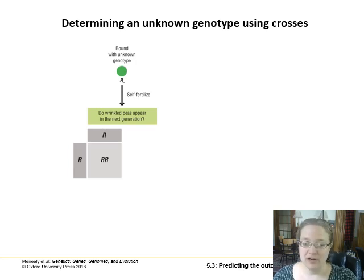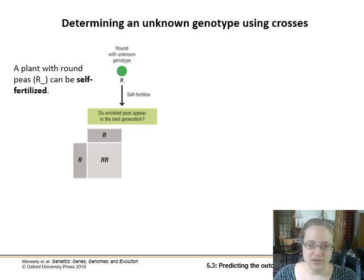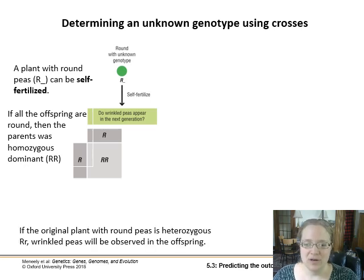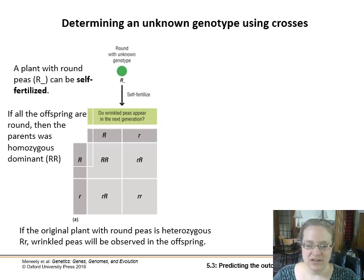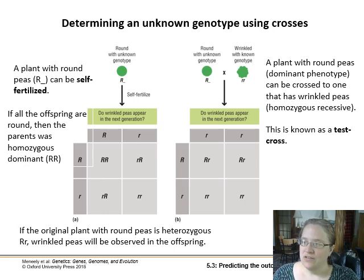If we've got a round pea and we're not sure what the genotype is, but we know it must have at least one round allele because it's expressing it, what we can do with plants is self-fertilize them — cross it back to itself. If all the offspring are round and not a single one is wrinkled, we can be pretty sure the parent was homozygous dominant. If wrinkled offspring appear in that self-fertilization cross, then the parent must have been heterozygous for the recessive allele to show up in homozygous recessive offspring.